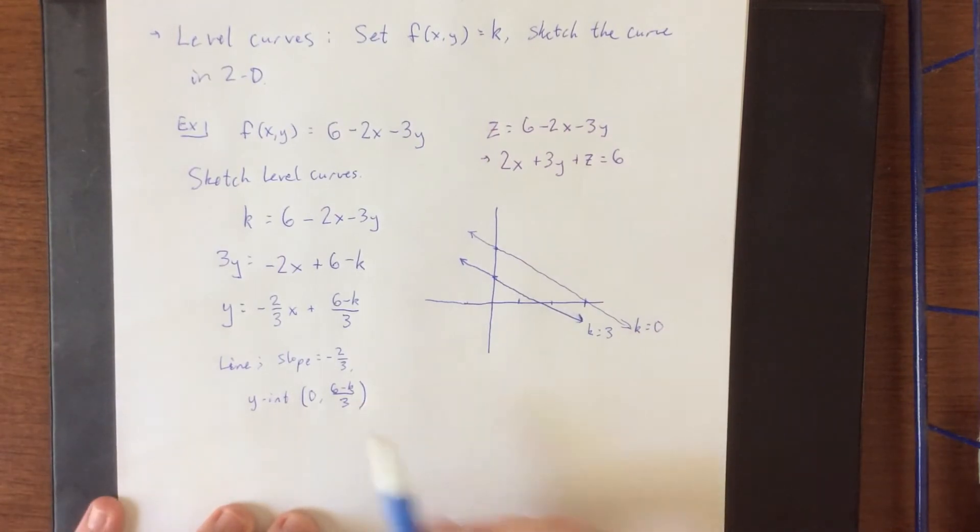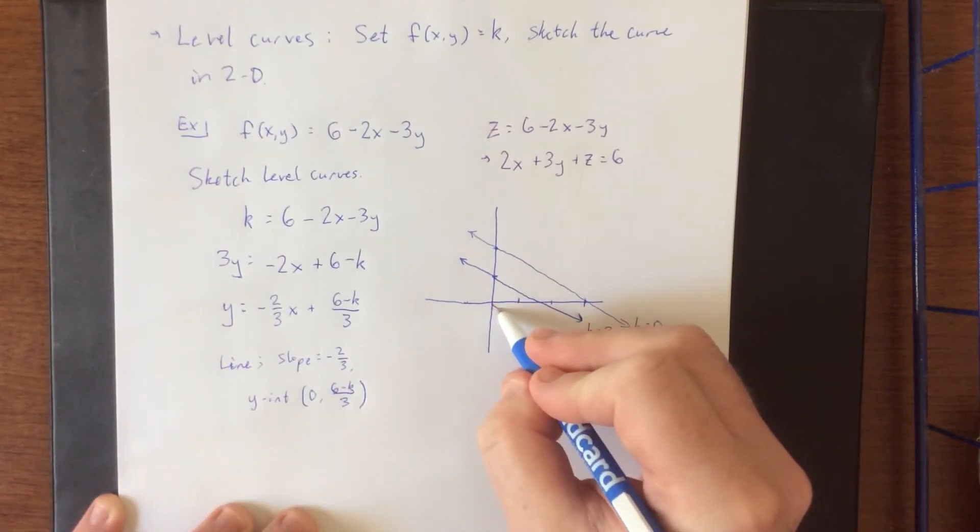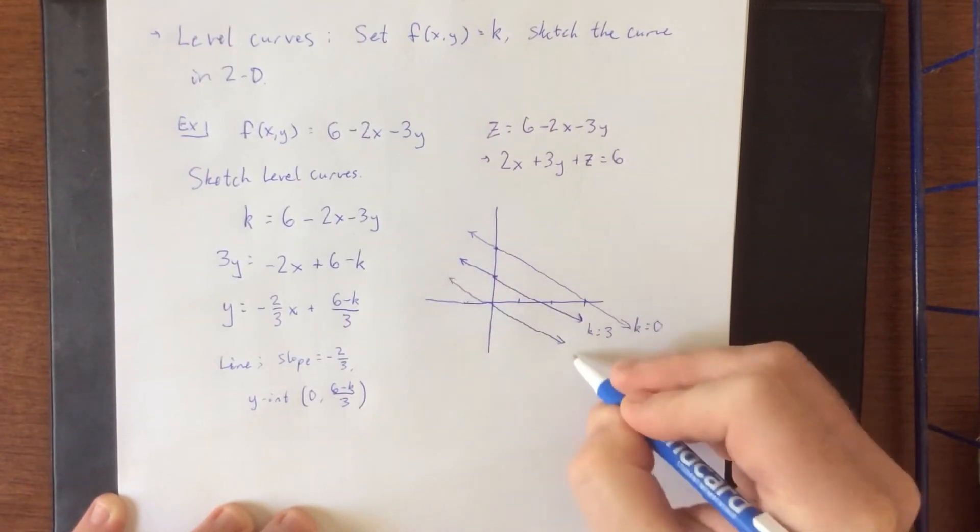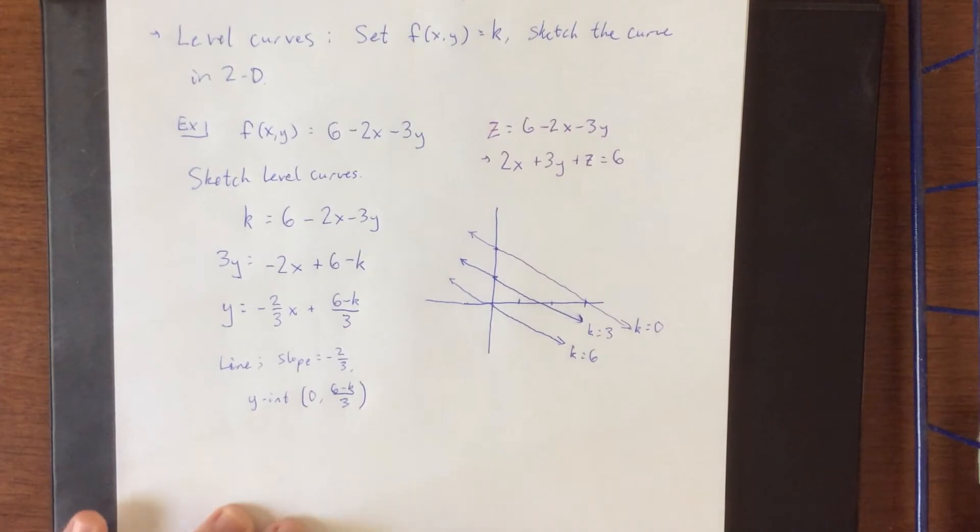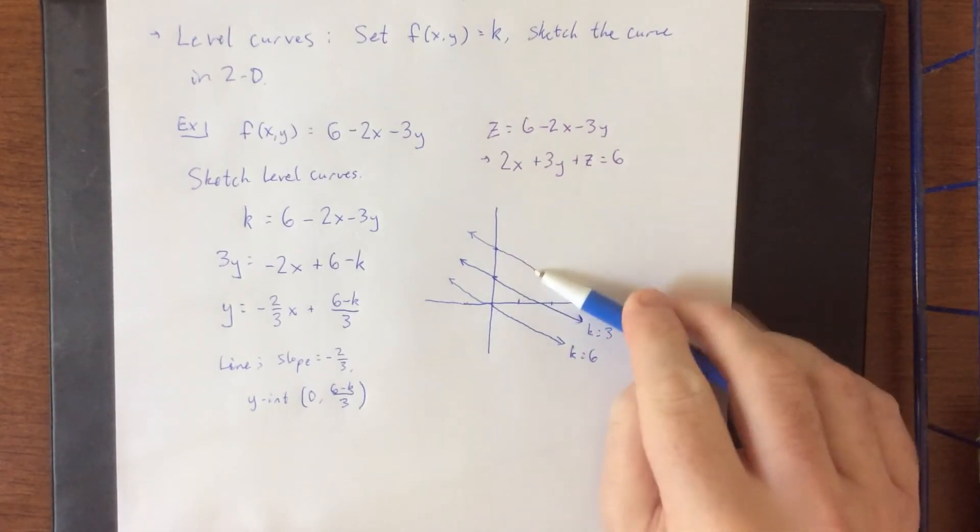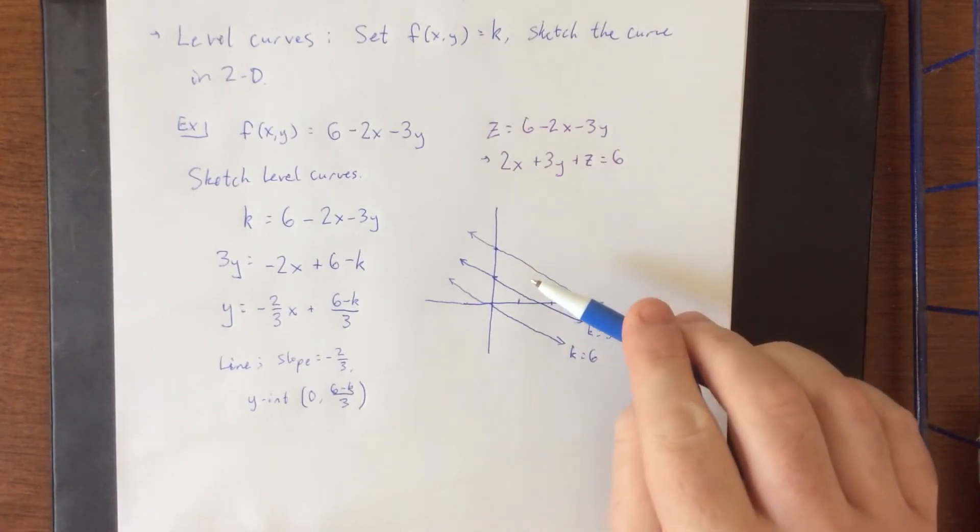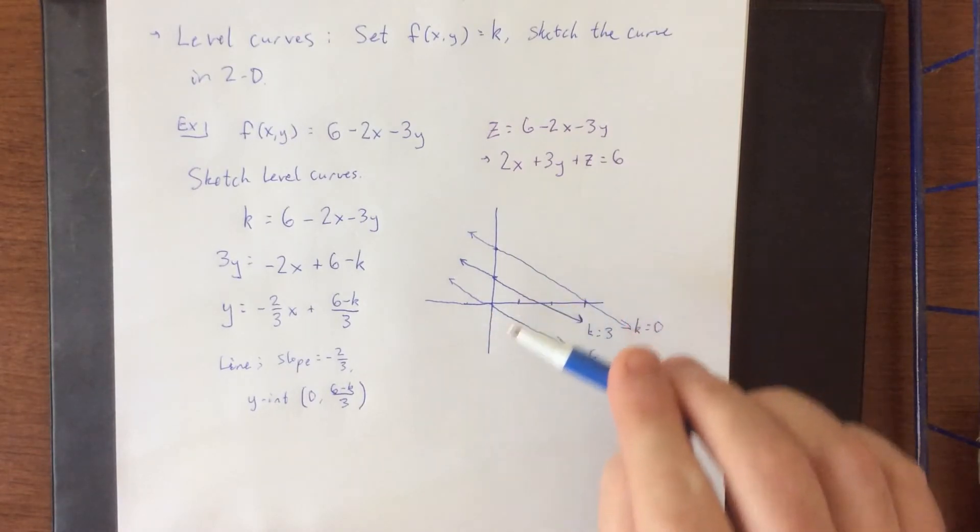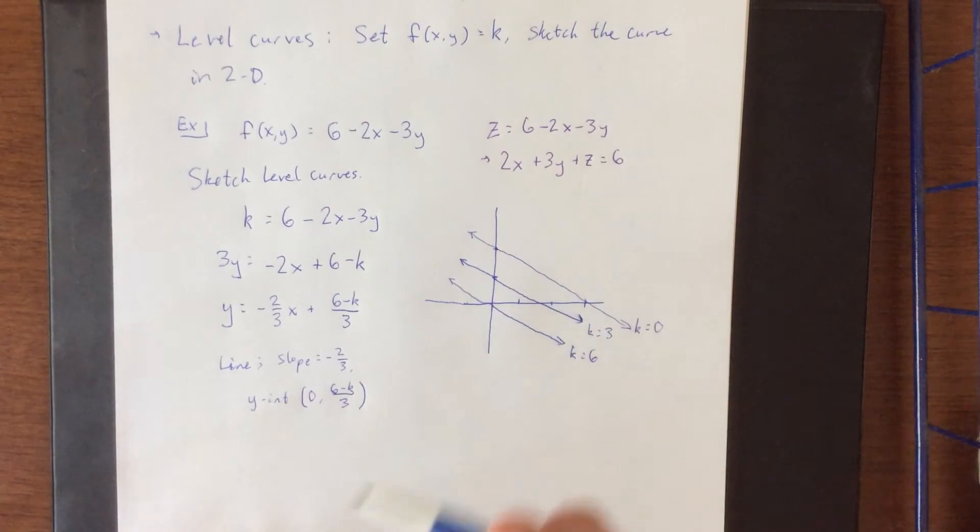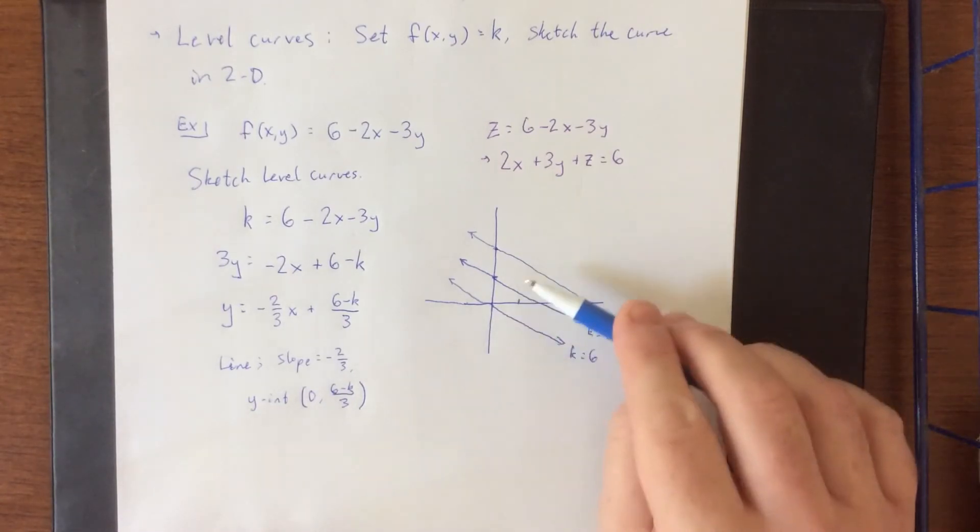Then if we were to plug in k equals 6, k equals 6 would still be parallel to these lines, but this time the y-intercept would be right at the origin. Now, what I'm seeing is a plane, and as the z-value is increasing, we're sort of moving in this direction, sort of back toward you or up toward you as we move to the left and down on these lines.